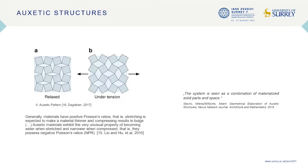Oxetic structures are based on a geometric pattern that expands when force is applied. The material does not get deformed — only the bounding box is scaled. Generally, materials have a positive Poisson's ratio: stretching is expected to make a material thinner, and compressing results in a bulge. Oxetic materials exhibit the very unusual property of becoming wider when stretched and narrower when compressed — that is, they possess a negative Poisson's ratio.